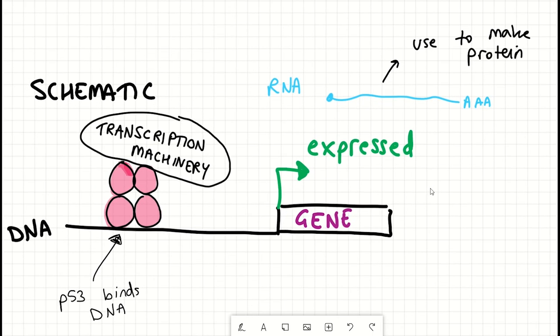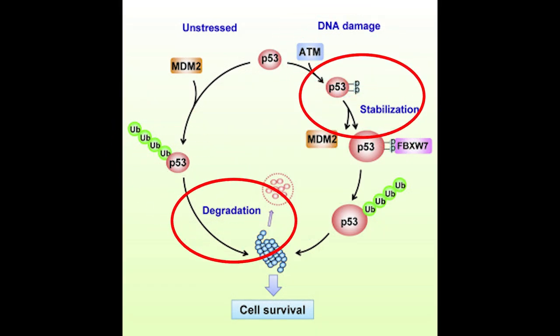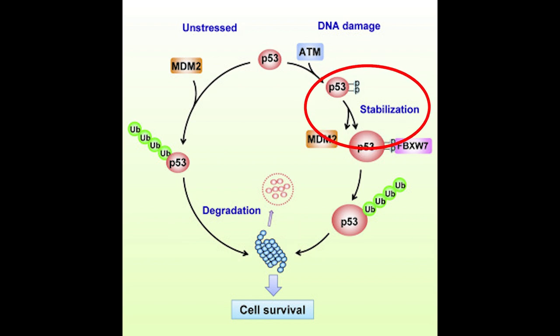Usually, levels of p53 protein are kept quite low within a cell. Only when a cell becomes stressed does p53 protein accumulate. It can then enter the nucleus and regulate the expression of other genes.